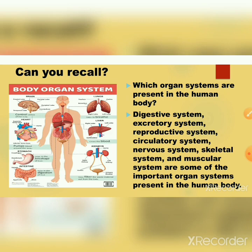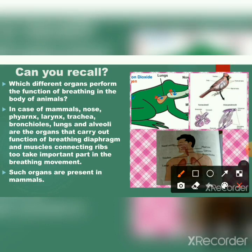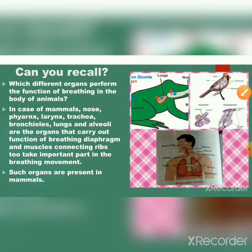The next 'can you recall' question is: which different organs perform the function of breathing in the body of animals? In the picture you can see a frog, bird, and humans. In the case of mammals, the nose, pharynx, larynx, trachea, bronchus, lungs, diaphragm, and muscles connecting the ribs carry out the function of breathing.